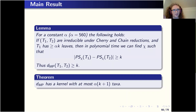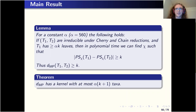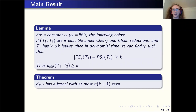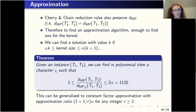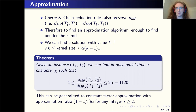That completes the proof of the key lemma: if two trees are irreducible under the cherry and chain reduction rules and have at least alpha times K taxa, then their maximum parsimony distance is at least K. Using this, we can show there is a kernel for the maximum parsimony distance problem with at most alpha times K plus one taxa.